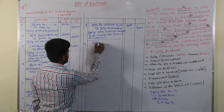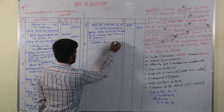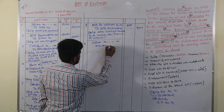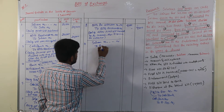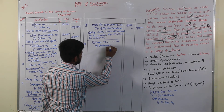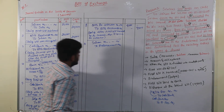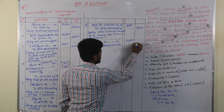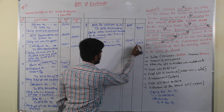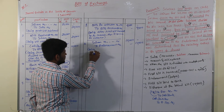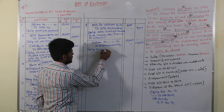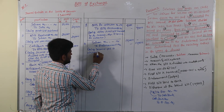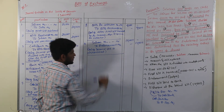Sfinam account Dr to Endorsement account. Only the second bill is endorsed; there is no discount on it. So the total amount to mention is 10,000. Narration: Second bill is dishonored.